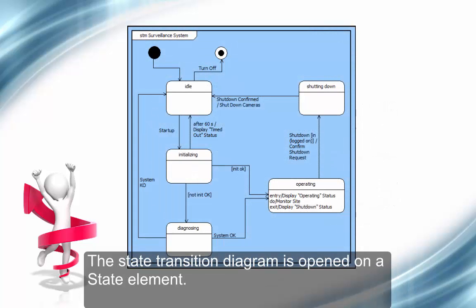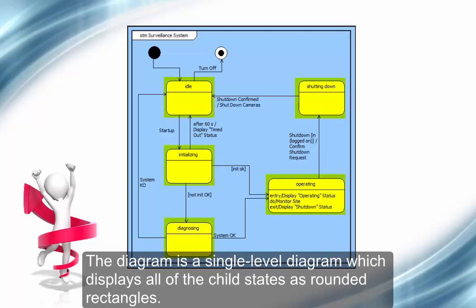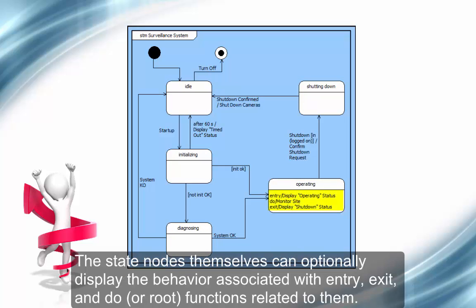The State Transition Diagram is opened on a state element. The diagram is a single-level diagram which displays all of the child states as rounded rectangles. The state nodes themselves can optionally display the behavior associated with entry, exit, and do or root functions related to them.